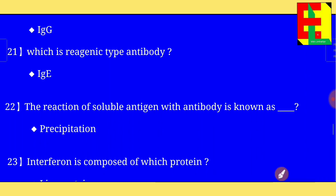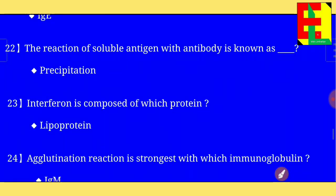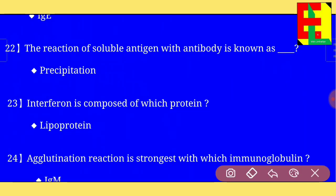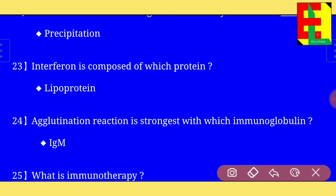Question number twenty-two: the reaction of soluble antigen with antibody is known as — the answer is — precipitation.